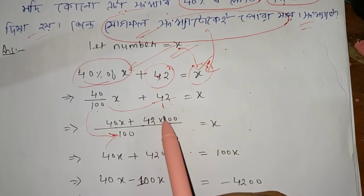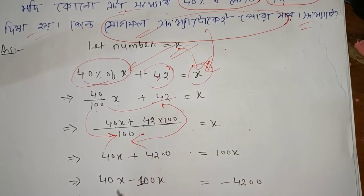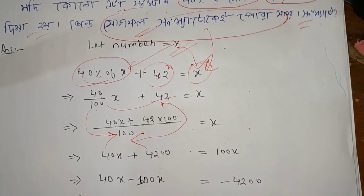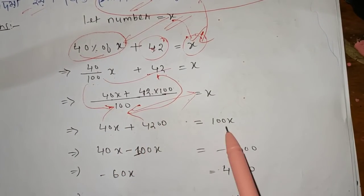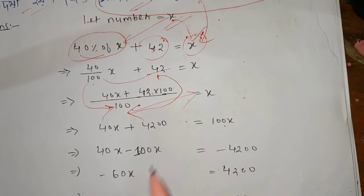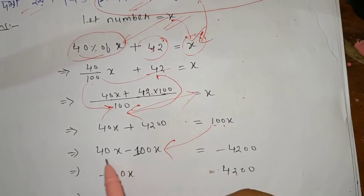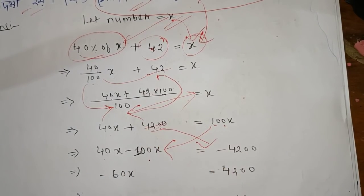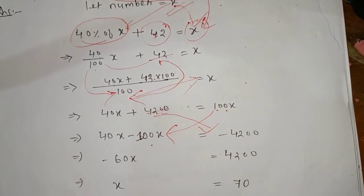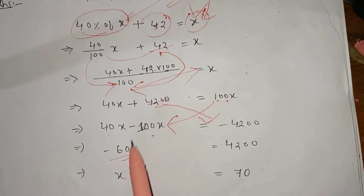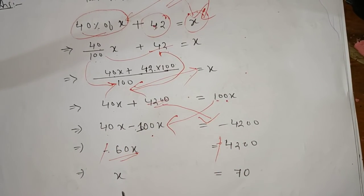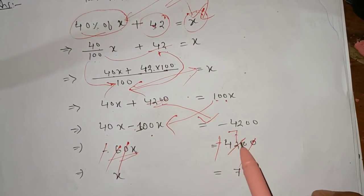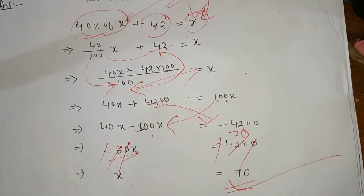The percentage gives us 40x plus 42 into 100. Cross multiplying: 100 into x is 100x. Then minus 40x from both sides gives 60x equals 42 into 100. So x equals 4200 divided by 60, and the number is 70.